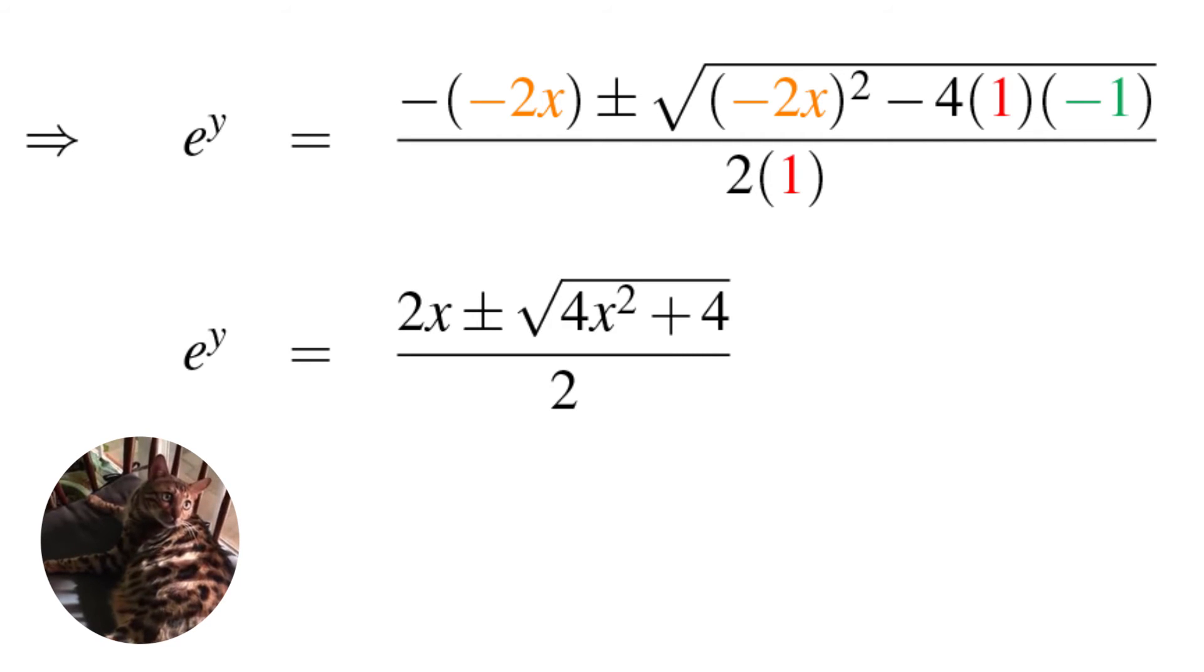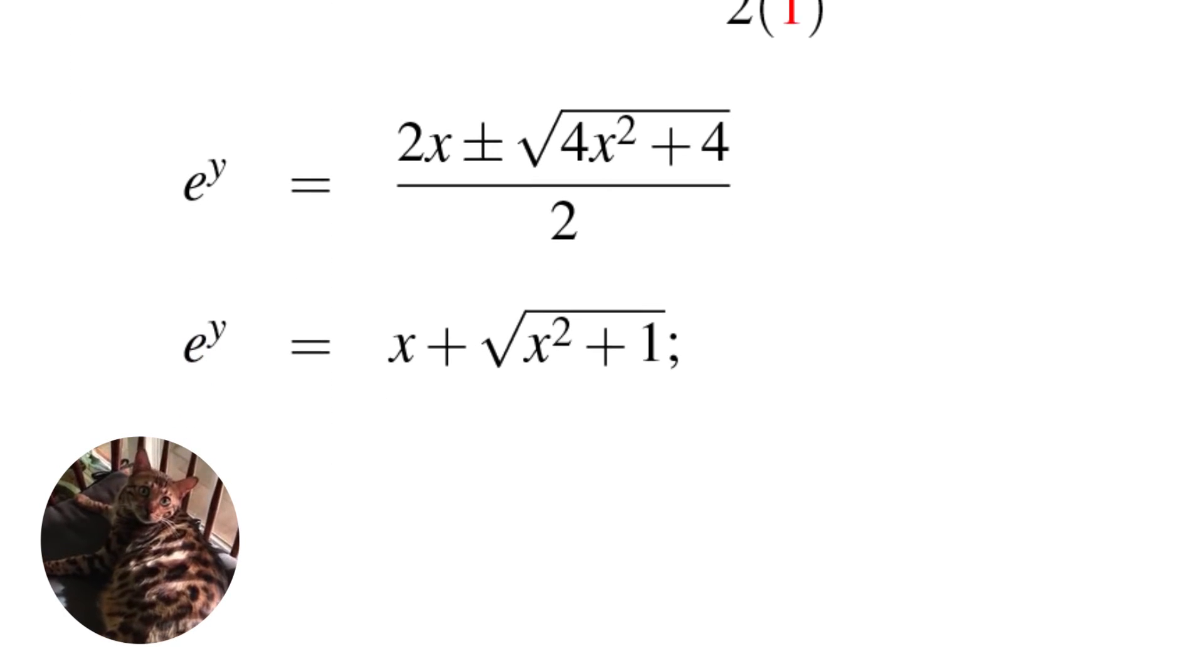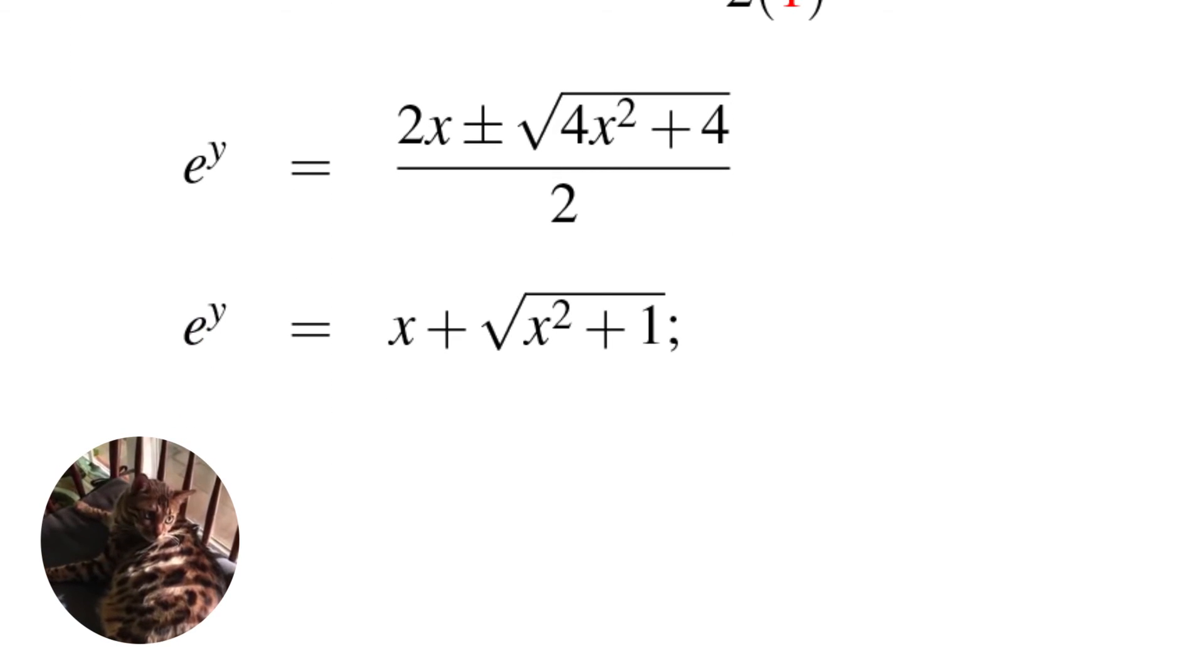Clearly there's a 4 common to both terms underneath the radical, so we factor that out as a 2, but then there's a 2 common to both terms in the numerator and denominator, so we simplify that. What we get is e to the y equals x plus square root of the quantity x squared plus 1.